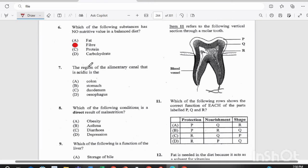Question seven. The region of the alimentary canal that is acidic is the A. Colon, B. Stomach, C. Duodenum, or D. Esophagus? If you answered A. Colon, you are incorrect. The answer there is B. Stomach.